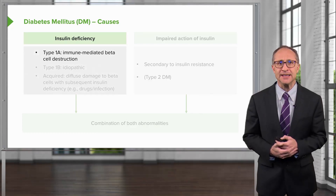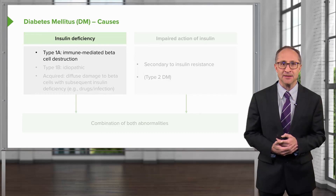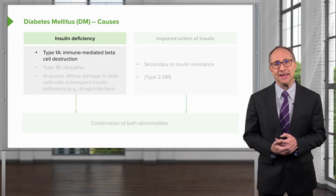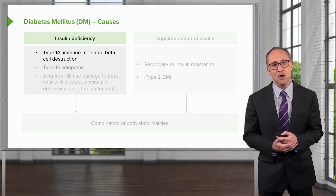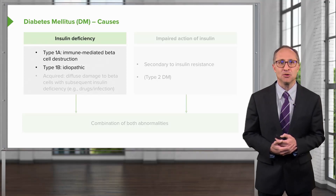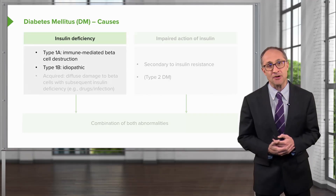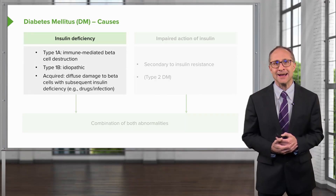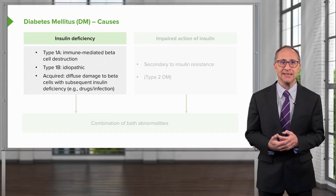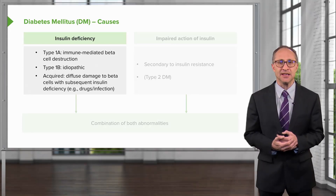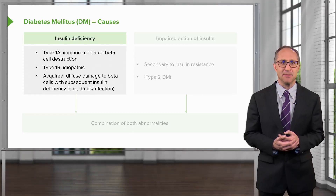This is usually due to insulin deficiency in the case of type 1 diabetes. Type 1 diabetes can be immune-mediated due to beta cell destruction, or idiopathic, which is non-immune-mediated — this particular type is very rare. Acquired diabetes involves diffuse damage of the beta cells with subsequent insulin deficiency, and this can occur from infections or drugs that affect the pancreas.